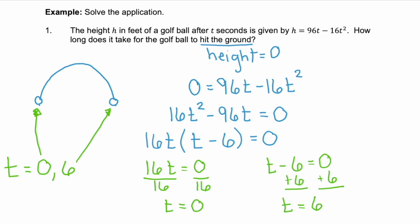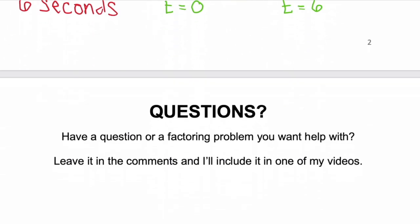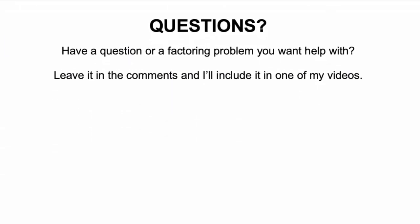Looking at that question again carefully — it asks how long it takes for the golf ball to hit the ground. The answer is six seconds. It takes six seconds from the time we hit the ball for the golf ball to come back and hit the ground. If you have a question or a factoring problem you want help with, leave it in the comments and I'll include it in one of my next videos. If this video was helpful, subscribe to my channel for more math tutorials. Thanks for watching.